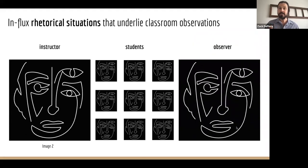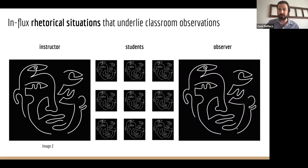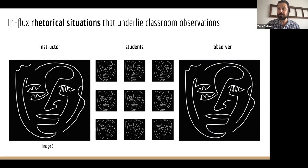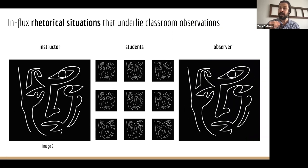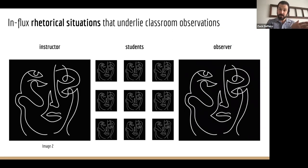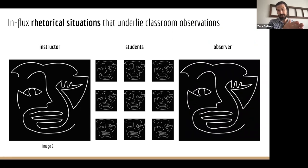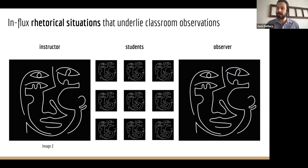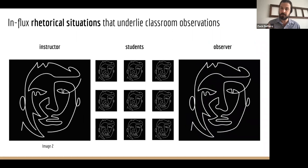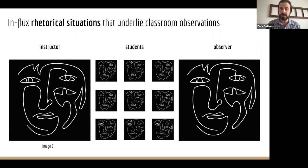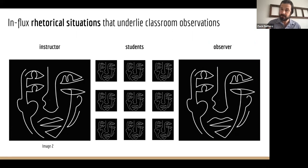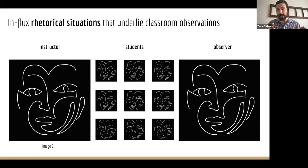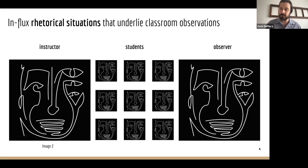I've been teaching for a dozen years now at various levels — junior high, high school, college — and perhaps like a lot of you, I've gotten observed many times. And just about every time, the observer changed, the students changed, my lesson changed, even I had changed. So when you think about it, there's a rhetorical situation underlying classroom observations that's always changing, constantly in flux. I find that really interesting and also possibly problematic, so I decided I wanted to study this in further depth.